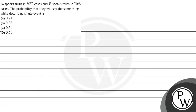Hello guys, let's read the question. The question says: A speaks truth in 60% of cases and B speaks truth in 70% of cases. The probability that they will say the same thing while describing a single event is: option A) 0.94, option B) 0.38, option C) 0.54, and option D) 0.56.